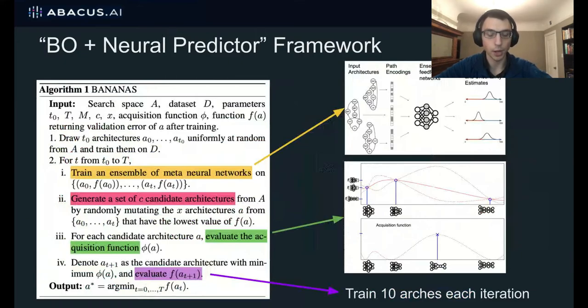And by far the bottleneck of this whole procedure is the very final step where we actually train a neural network. But this can be easily parallelized if we just take the top k neural architectures and train all of them in parallel.